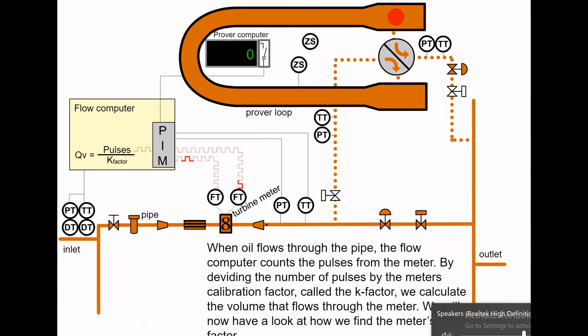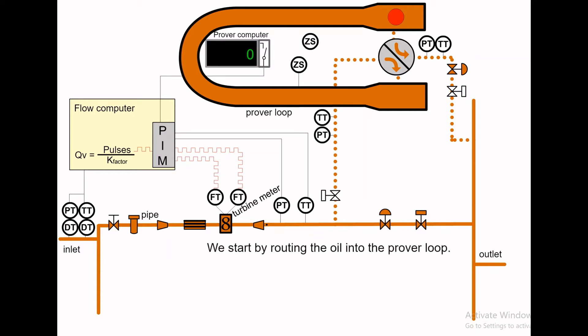We start by routing the oil into the prover loop. First we open the prover loop's outlet valve and then the inlet valve. The oil is now able to flow through the prover loop. Then we close the pipe's outlet valve and adjust the flow rate to the value it had before starting the calibration. The valves are checked for leakage and we check that the flow rate, temperature and pressure are within the scope.